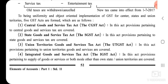The second one is the State Goods and Service Tax Act, the SGST Act — 'S' stands for State. In this Act, provisions pertaining to State Goods and Service Tax are covered. The third one is the Union Territories Goods and Service Tax Act, the UTGST Act — 'UT' stands for Union Territory. In this Act, provisions pertaining to Union Territories Goods and Service Tax are covered.